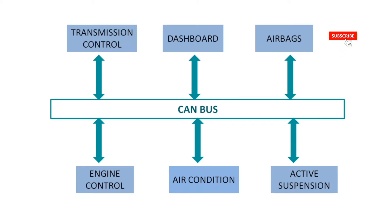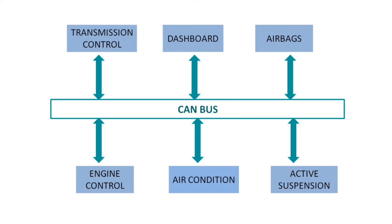As soon as we introduced the CAN protocol, the network was simplified. In CAN protocol, only two wires are needed to connect, and those two wires can handle all the communication, reducing the wire count significantly.